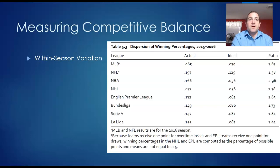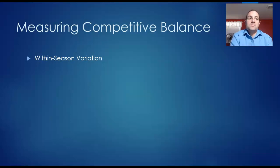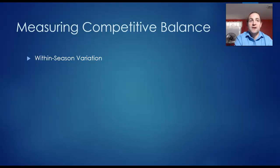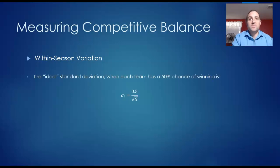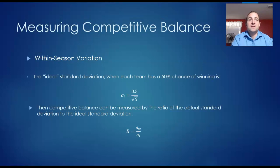The biggest reason the NBA is less competitive is the theory that you can't teach height. In basketball, taller players have a distinct advantage, and the number of people who are tall enough is relatively small. In the NBA, with only a few players on each team and only a few superstars in the league, teams that have multiple superstars tend to be of much higher quality than others. That is the within-season variation.